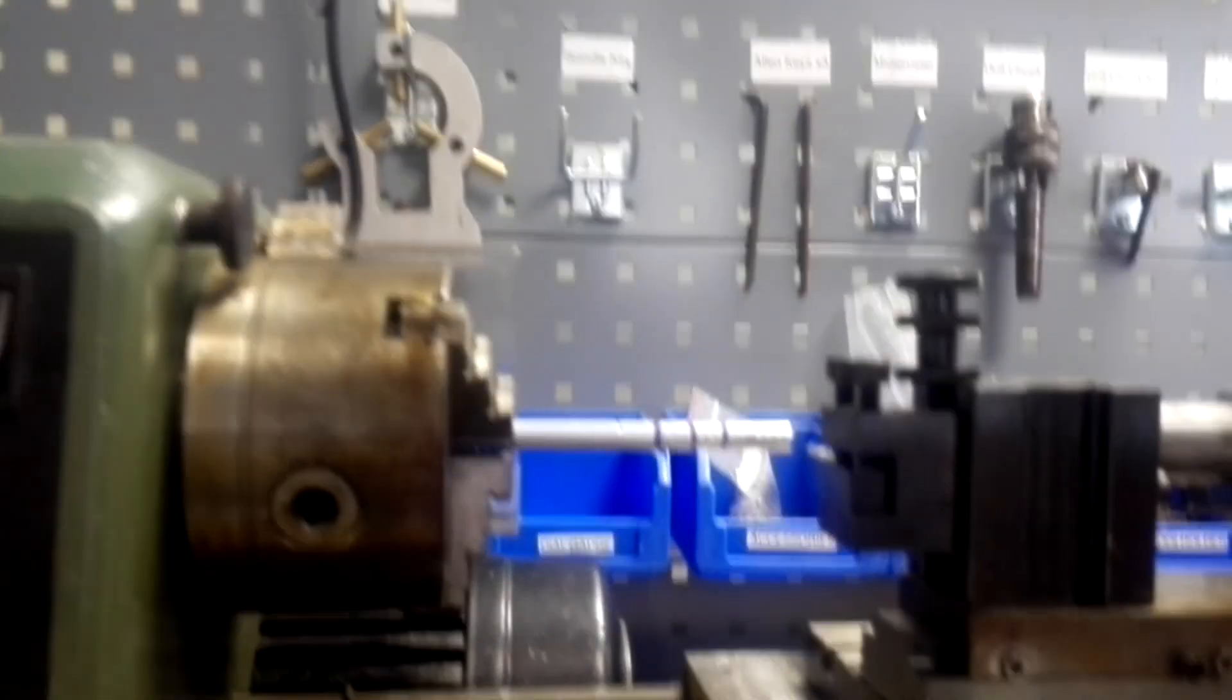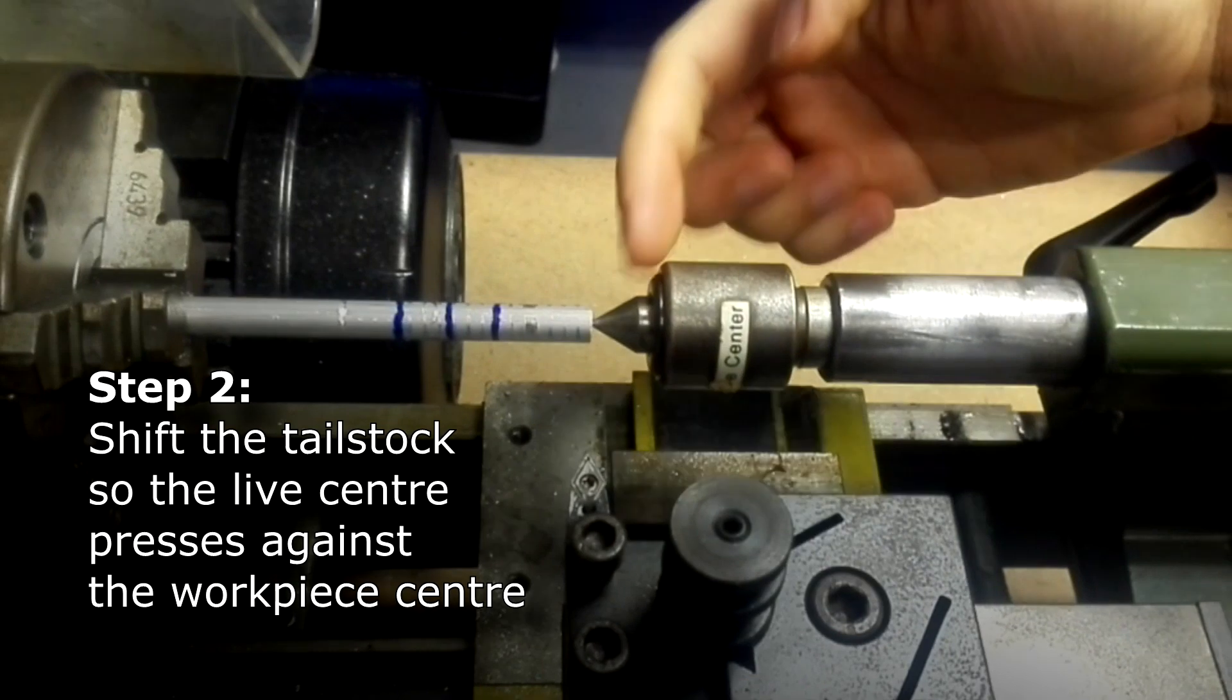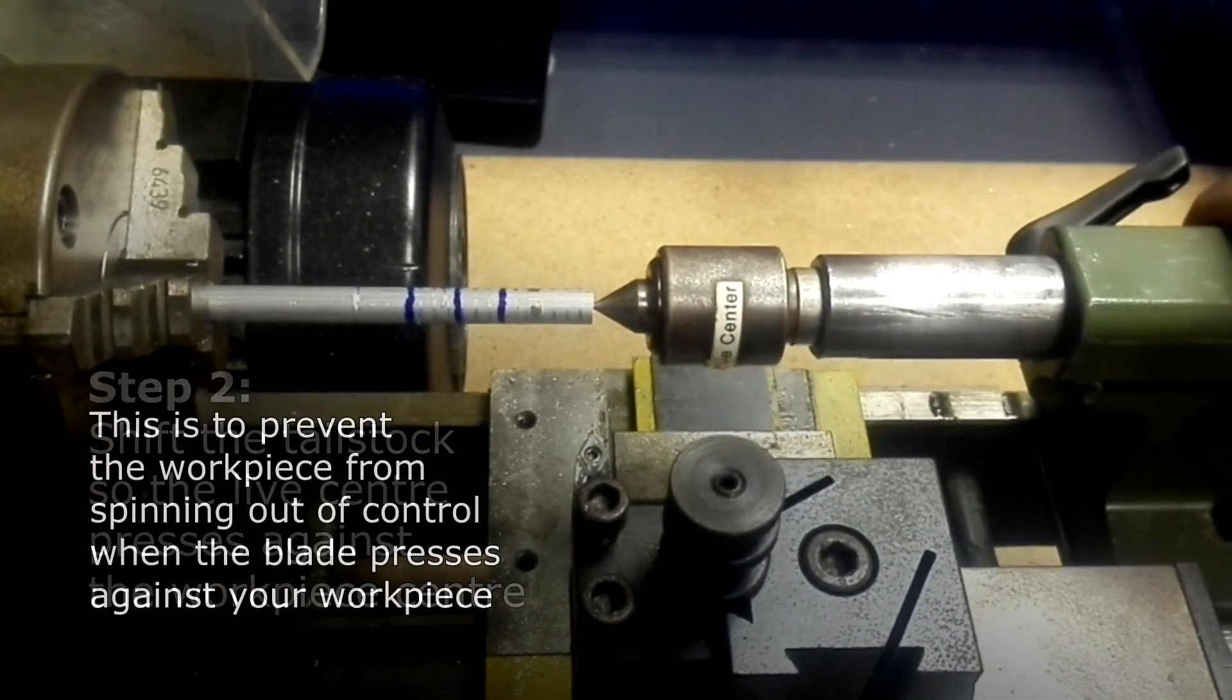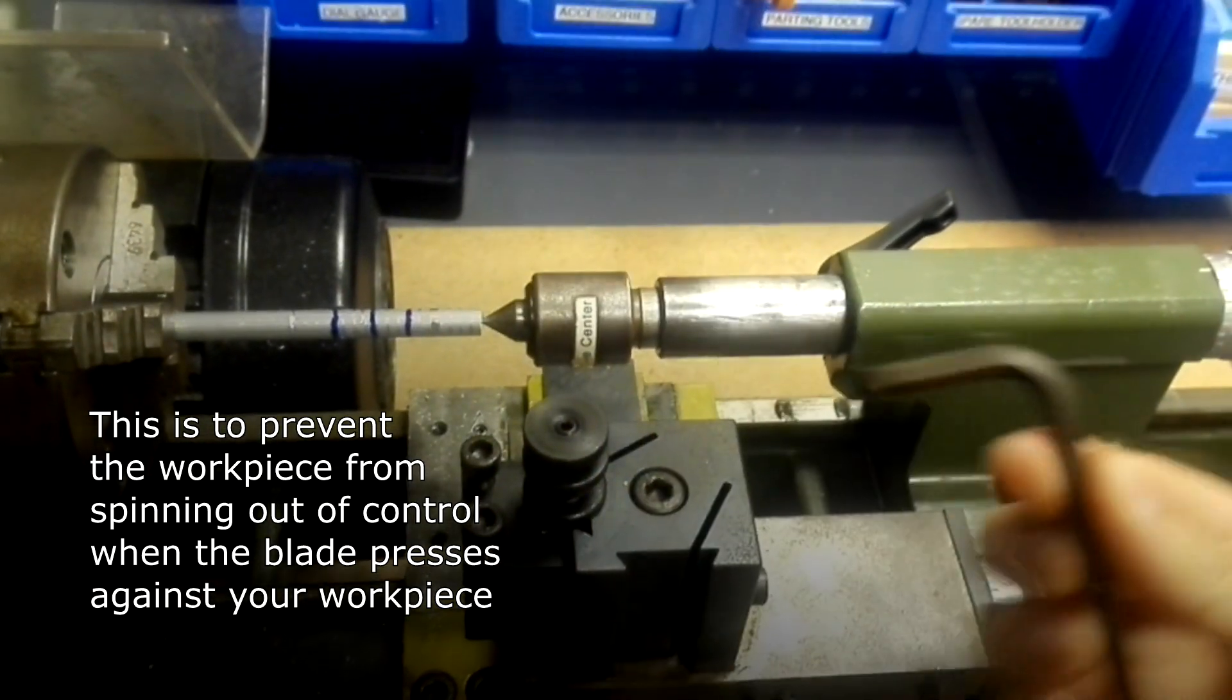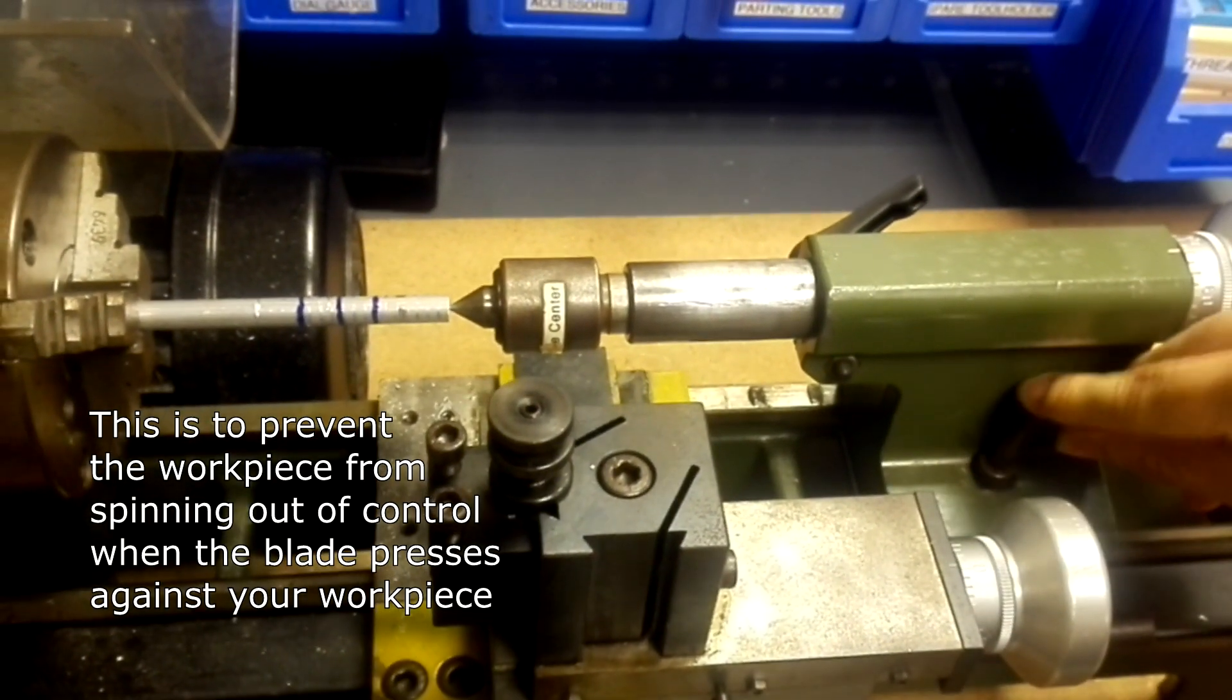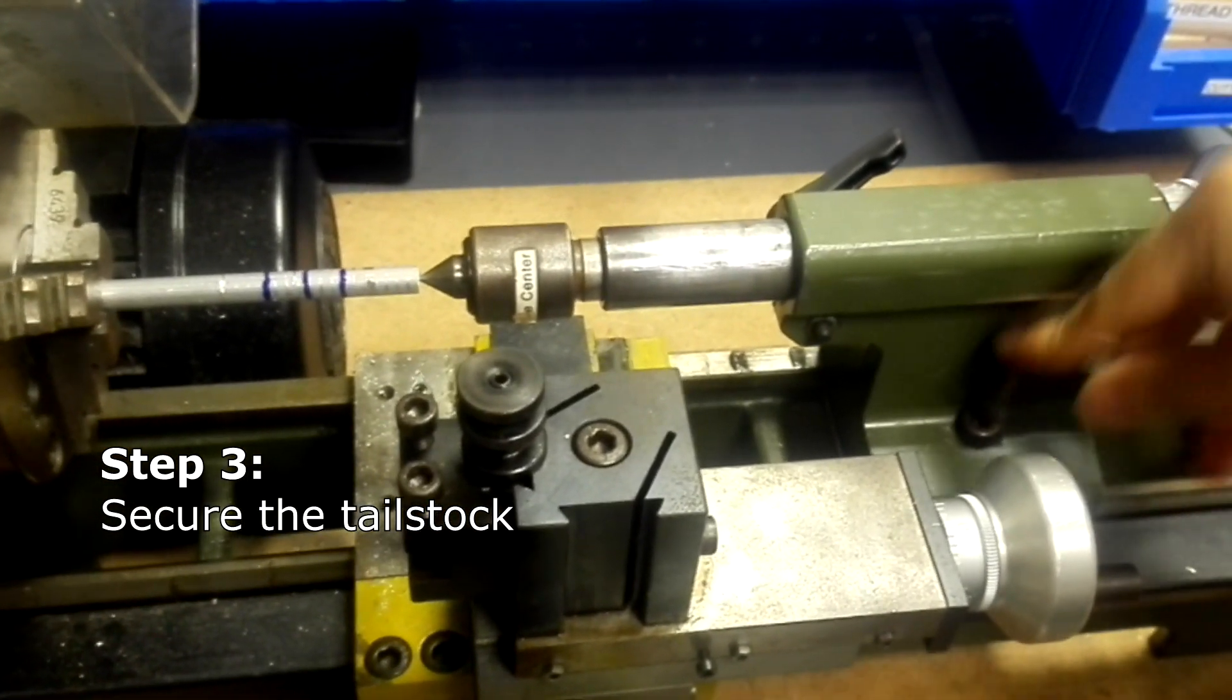Now the next thing to do is to shift this tailstock to the center such that the live center is hitting onto the center of the workpiece. Then we use an allen key to tighten the tailstock.